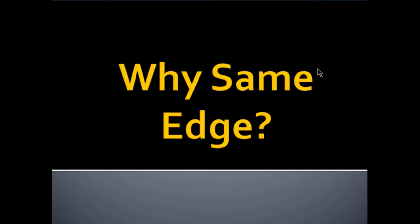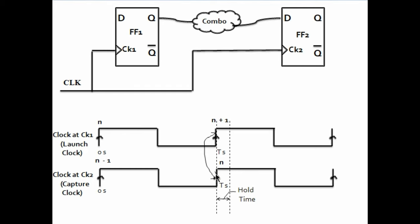Now, the question that bothers most people is: why same edge? Why do we check hold at the same edge itself? Hold is checked at the same edge because this same edge is going to both the flip-flops. At this edge the capture flop is capturing the current nth data, while at the same edge the launch flop is launching the next data which is n+1 data. So, the hold check is to make sure that this new n+1 data being launched at the same edge should not come so fast that it corrupts the current data being captured at the capture flop. I hope you understood why we check hold at the same edge.